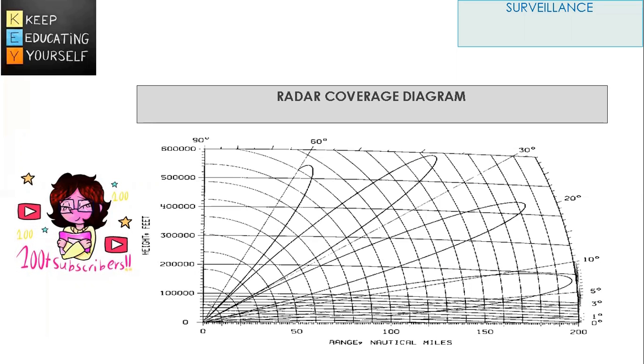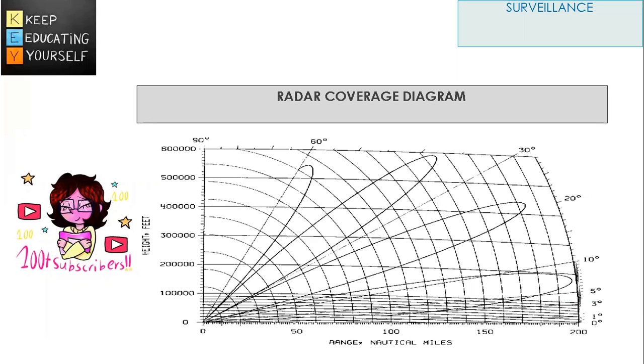In the next video, we will cover types of radar. There are two different types of radar in use for air traffic service: primary radar and secondary radar.